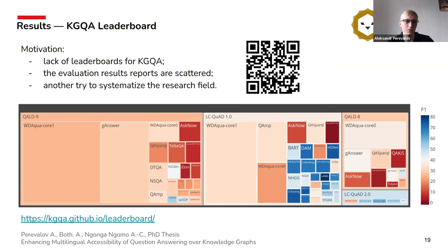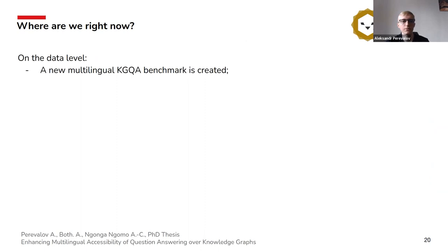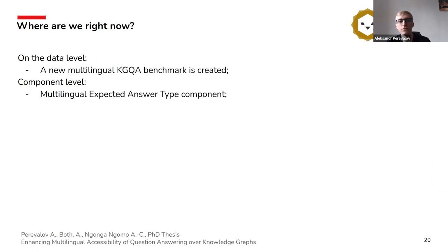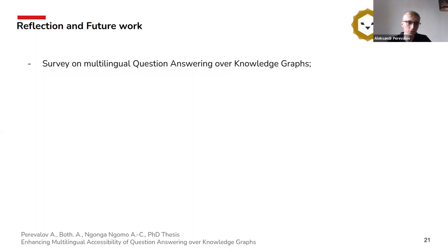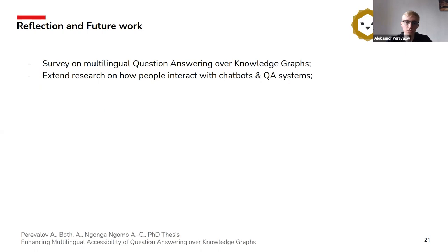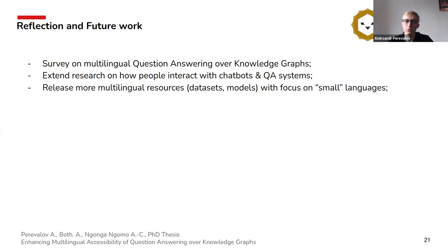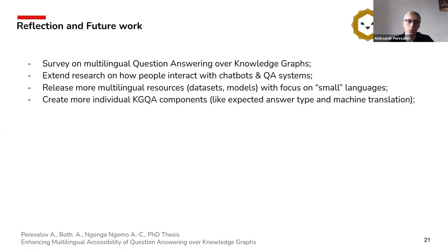So where are we right now? On the data level, we have created a new multilingual knowledge graph question answering benchmark. On the component level, we created a multilingual expected answer type component and evaluated knowledge graph question answering systems with machine translation. On the meta-analysis level, we created a knowledge graph question answering leaderboard and are in progress of creating a systematic review on this topic. For future work, we want to create a survey or systematic review, extend research on how people interact with chatbots and question answering systems, release more multilingual resources with a focus on small languages, create more individual components, and ultimately propose a language-agnostic approach for knowledge graph question answering systems.